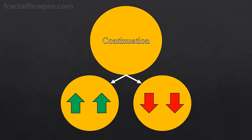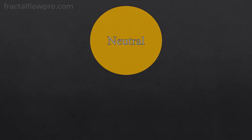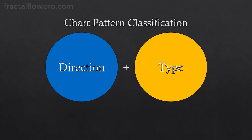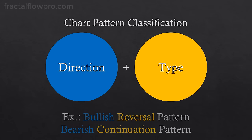We have the neutral chart pattern classification, which means that price can either go up or down depending where price breaks out of the pattern. The way chart patterns are classified is by combining these two types of classifications together. For example, when we talk about a bullish reversal chart pattern, we are talking about a pattern that appears when price is going down in order to signal a reversal to the upside. The term bullish indicates what's going to happen after the pattern, and the term reversal means that price will change its direction after the pattern.